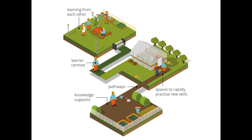Learners are given pathways that guide them through the ecosystem towards particular goals. They have ready knowledge supports, job aids, and information at their fingertips. The learning experiences are not used for giving information as a one-dimensional thing — the learning spaces become spots to practise new skills and learn from each other.